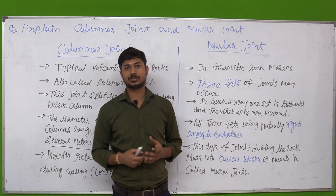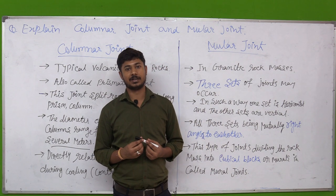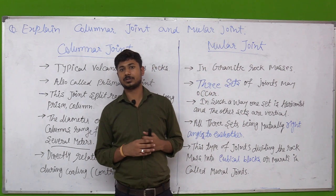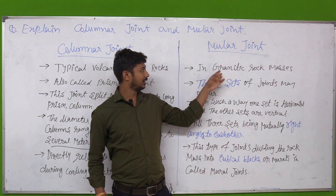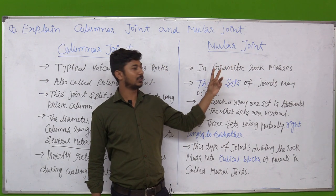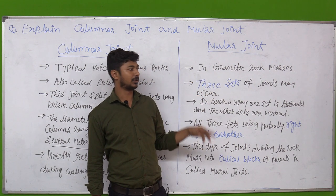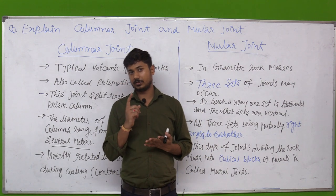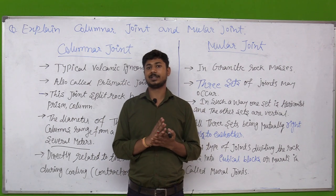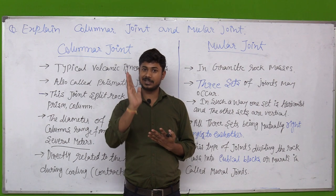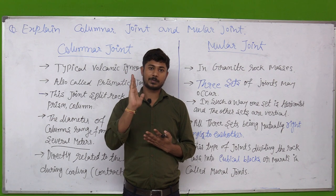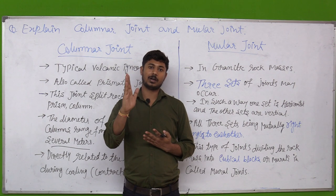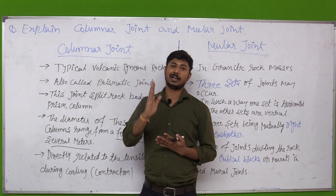Next, we talk about muller joints. Muller joints are found in granite rock masses. These are the granite rock masses. They occur in three sets which are in perpendicular or right angle to each other.